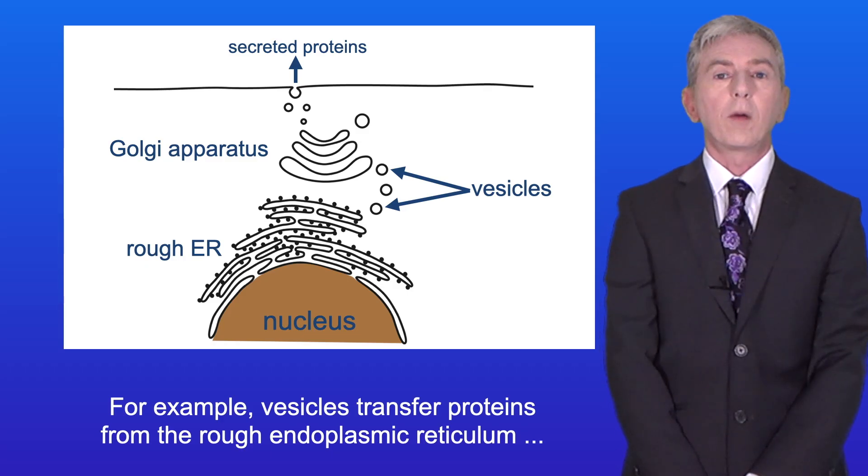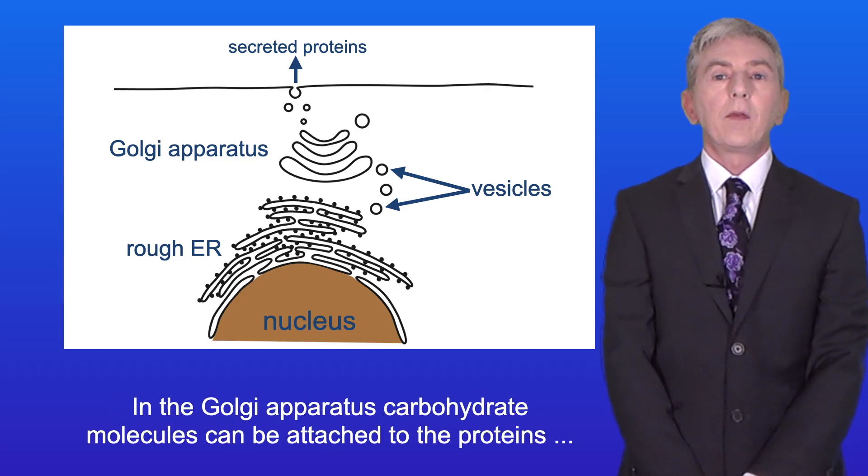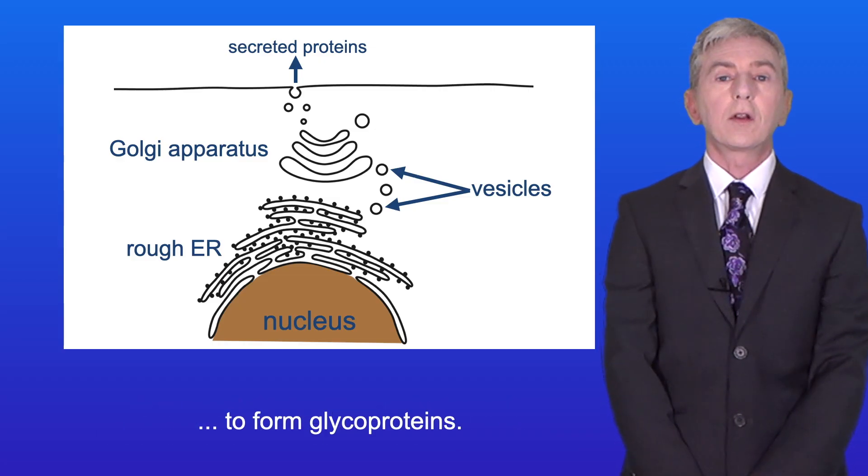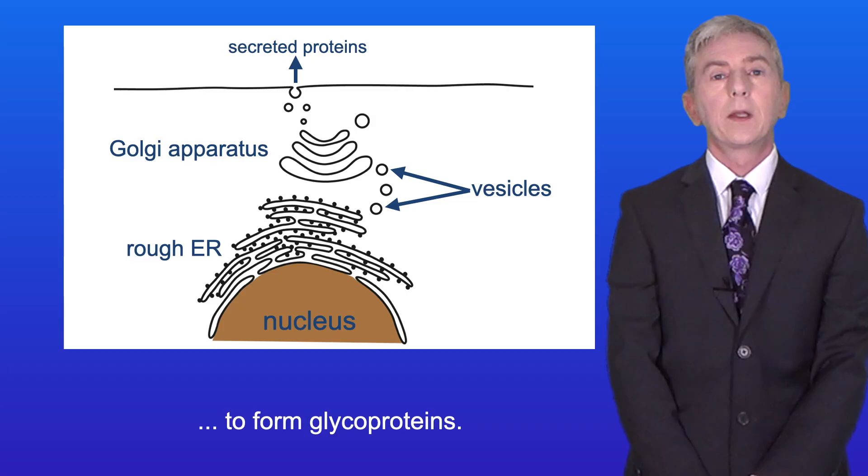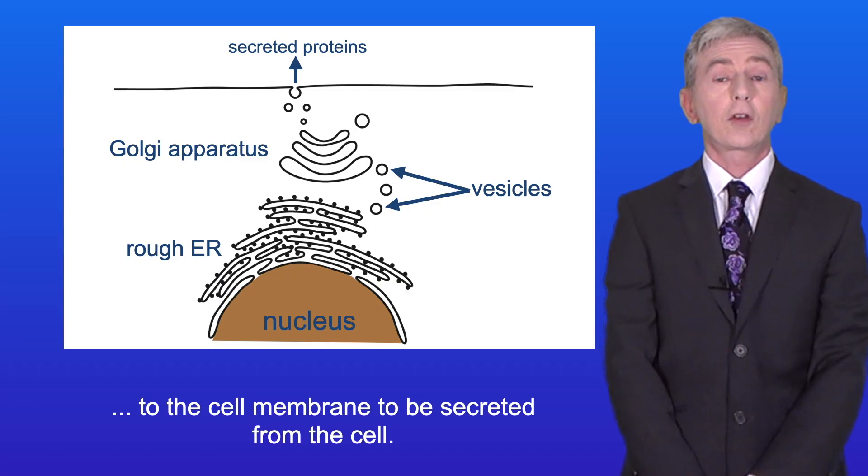Vesicles transfer proteins from the rough endoplasmic reticulum to the Golgi apparatus. In the Golgi apparatus carbohydrate molecules can be attached to the proteins to form glycoproteins. Vesicles then carry the glycoproteins from the Golgi apparatus to the cell membrane to be secreted from the cell.